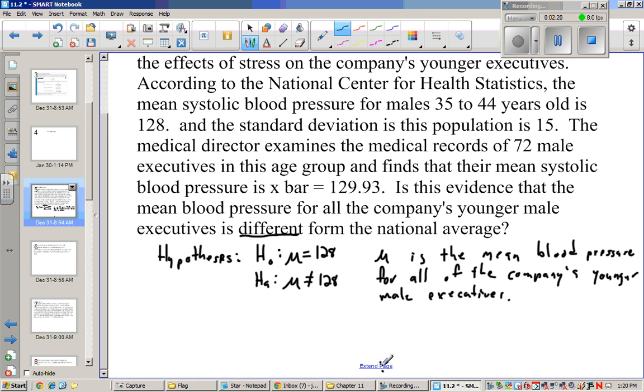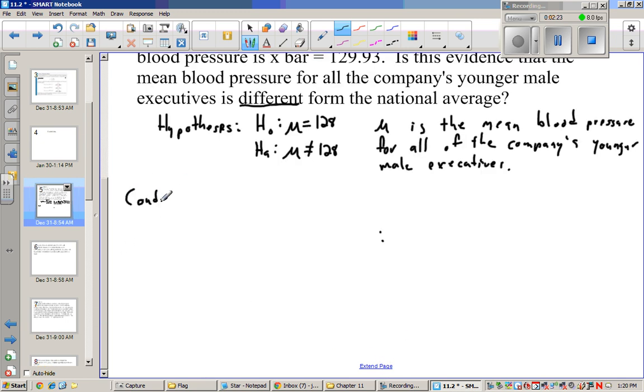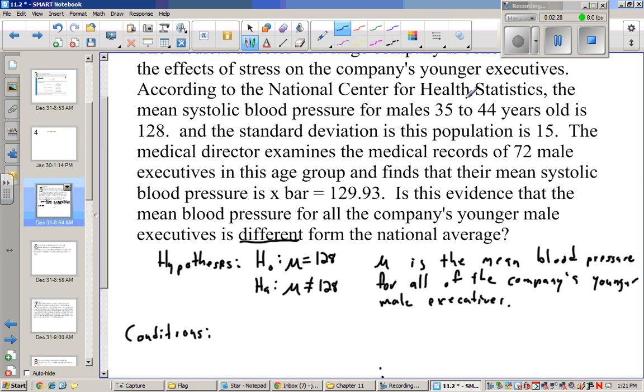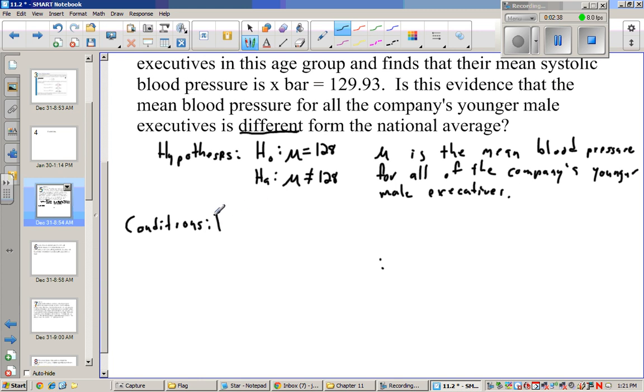So the next part we have to do is we have to look at the conditions and see if it meets. Now, does this come from a random sample? It doesn't say random sample, it just says it looks at 72 males. So data don't come from a random sample. That tells us it's going to be hard to generalize this information to more people.